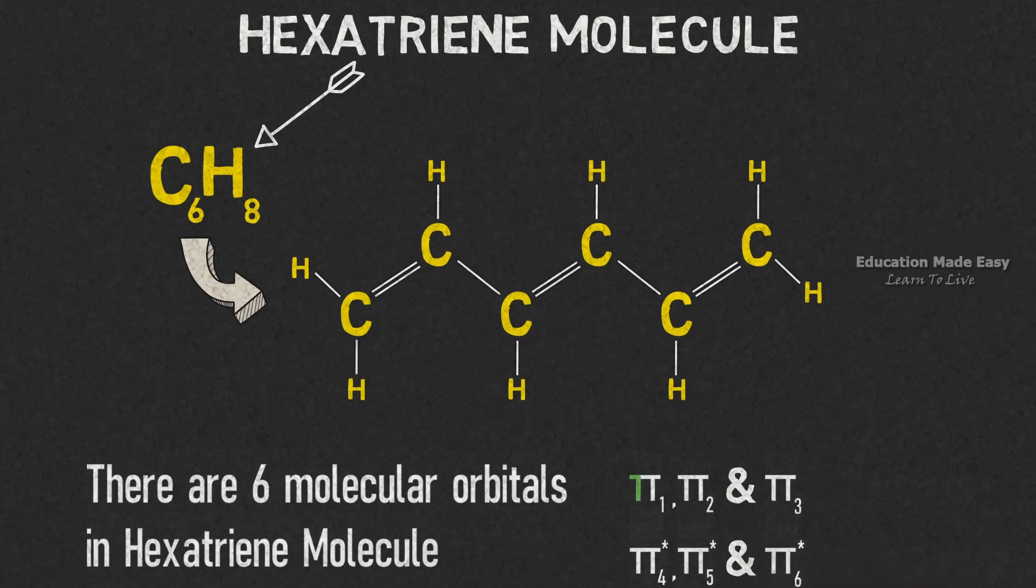Among these six molecular orbitals, Pi1, Pi2, and Pi3 are the bonding molecular orbitals, whereas Pi4 star, Pi5 star, and Pi6 star are the antibonding molecular orbitals.